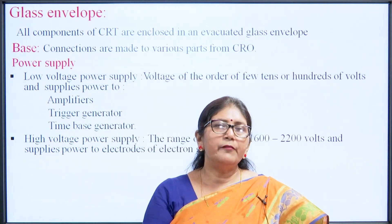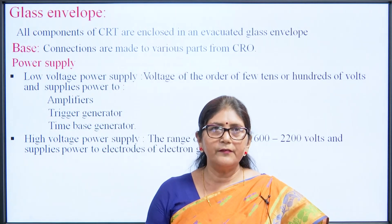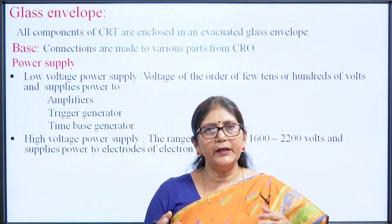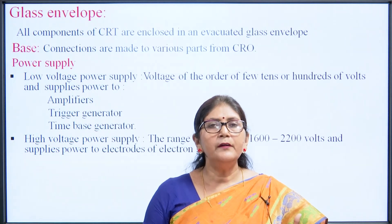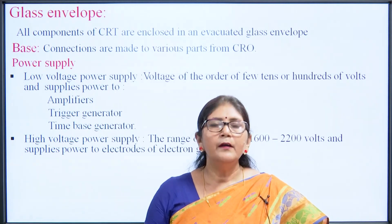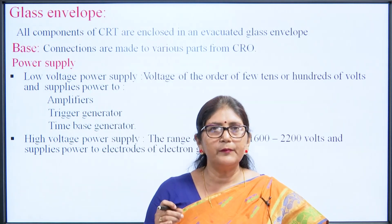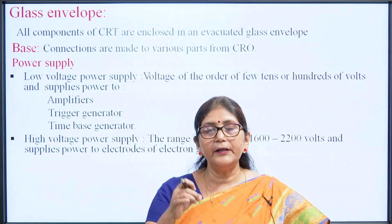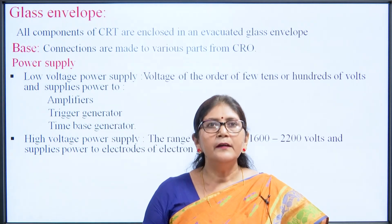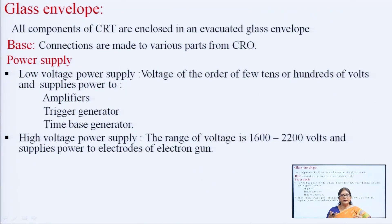There is an evacuated glass envelope inside which all the components are placed. All connections between the various parts of the CRT are made through the base. High voltage power supplies are required for the different anodes and cathode of the CRT, while low voltage power supplies are used to supply different circuits of the CRO such as the vertical amplifier, horizontal amplifier, delay circuit, and triggering circuits.